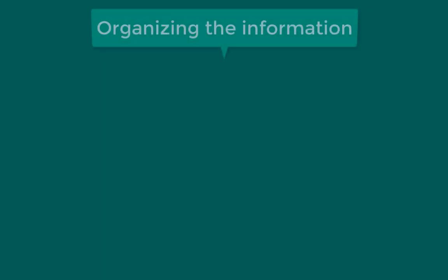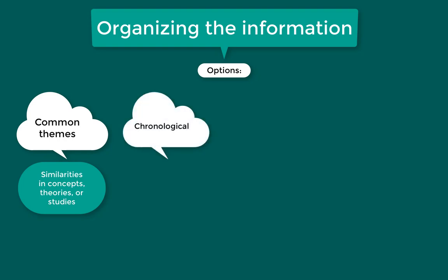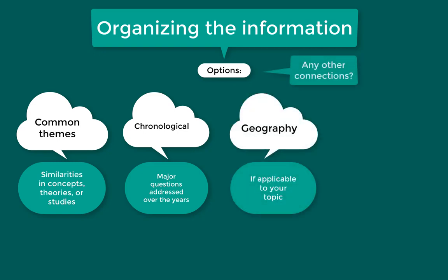When you are taking notes, make an outline to plan how you will organize the information. There are a few different ways to do this. You can look for common themes and patterns across the topic you are researching, including similarities in concepts, theories, or studies. You could organize the information chronologically and discuss major questions that have been addressed by researchers over the years, showing the historical development of the field. Depending on your topic, it might make sense to organize your information by geography or by other connections you are seeing in the research.